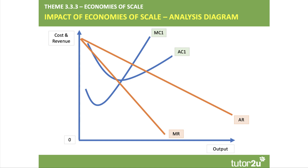Let's work through diagrammatically how economies of scale can affect consumer surplus, using cost and revenue curve analysis. We have a set of cost curves MC1 and AC1 with a downward sloping average and marginal revenue curve. Assuming a profit-maximizing firm, initially the price is P1 and output is Q1, where marginal cost meets marginal revenue, and the green area shows the level of profit.